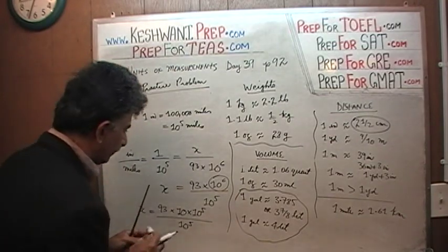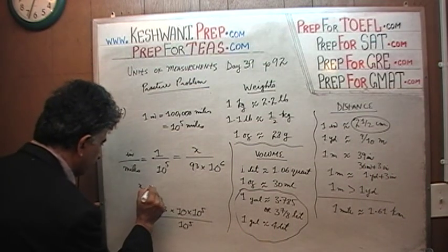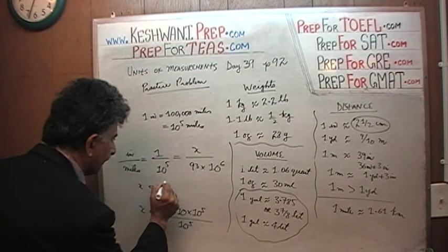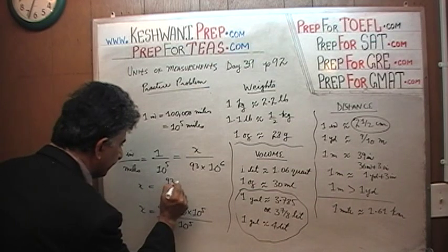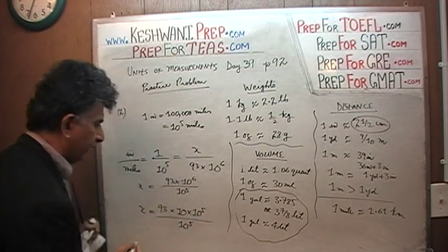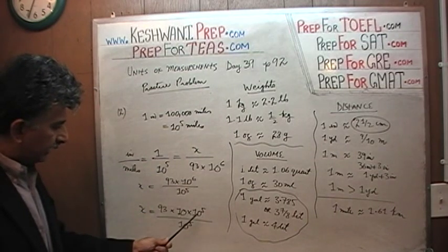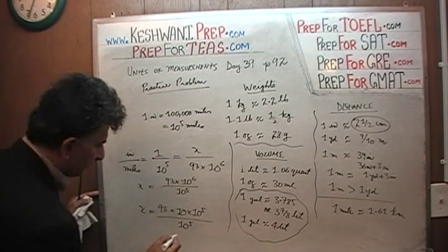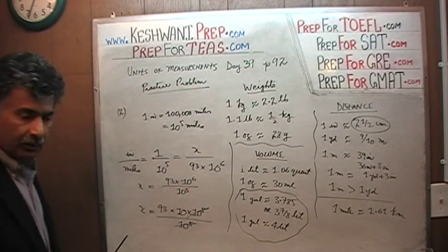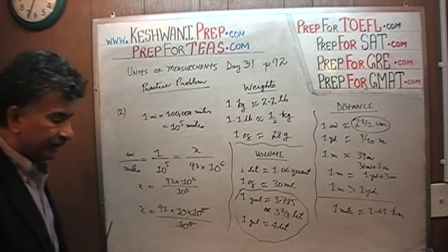So x equals to 93 times 10 raised to 6 over 10 raised to 5, and what we are doing here is we are writing 10 raised to 6 as 10 times 10 raised to 5 and of course the 10 raised to 5 is going to cancel out and we are left with 93 times 10, 93 times 10 is 930.